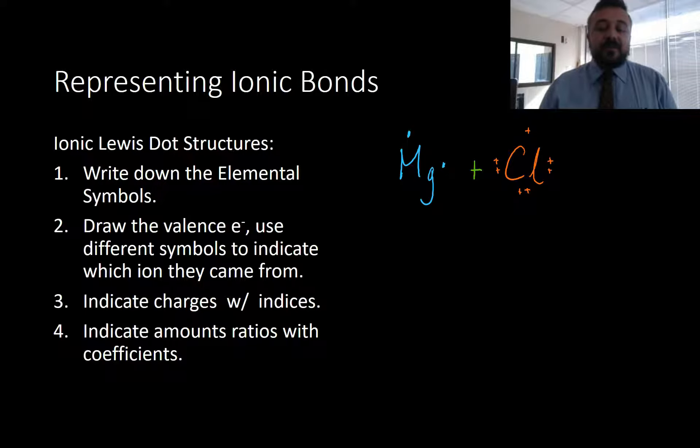So, when we represent ionic bonds, we want to talk about Lewis Dot structures. It's a really good way of doing it. So, we write down the elemental symbol for a Lewis Dot structure. We draw the valence electrons. So, we pop these around. So, magnesium has two. Chlorine has seven. And you'll note that we've used different symbols on them to indicate where they come from because that's them as elements. We're about to show them as the ions.